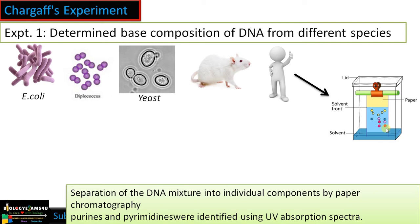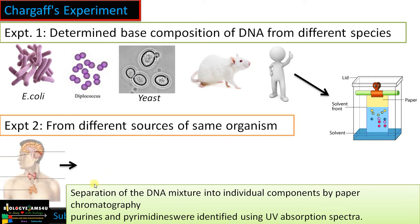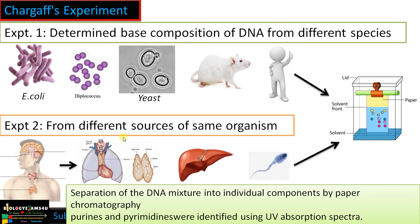I will be leaving the link of the paper in the description. The second part is isolation of DNA from different sources of the same organism. For example, from humans he isolated DNA from thymus, liver, sperm cells, spleen, etc., and followed the same procedure of separating the bases and quantifying it.